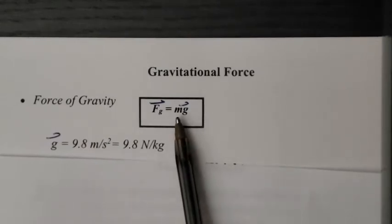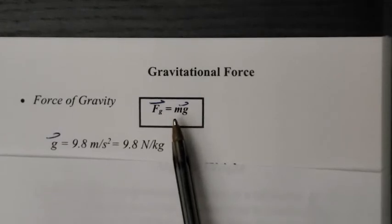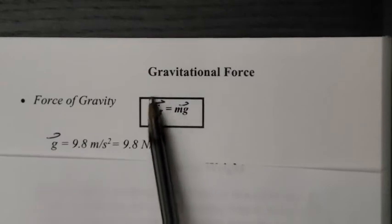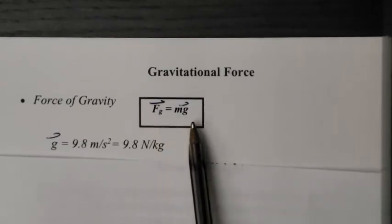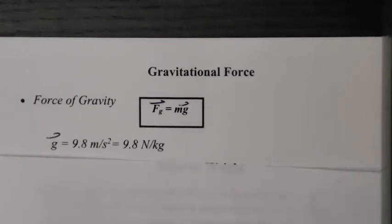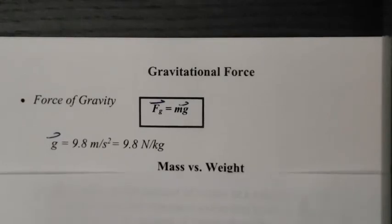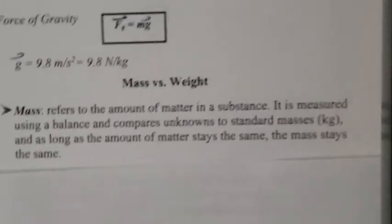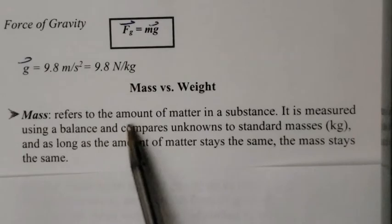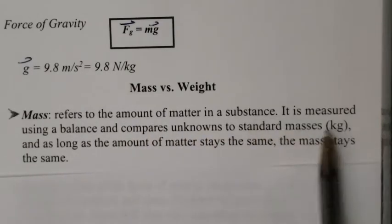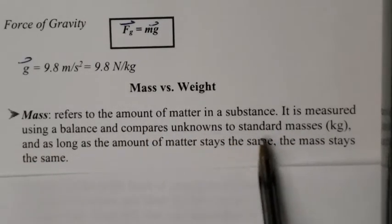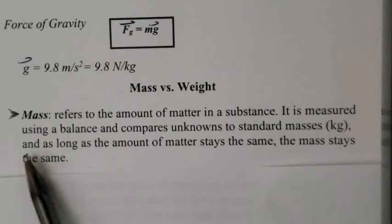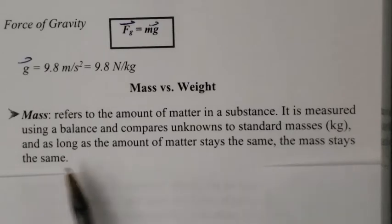We have to be careful with the way we define things. Mass is measured in kilograms. The word weight actually refers to the force of gravity. So weight and force of gravity mean the same thing. And that's actually measured in Newtons. So mass refers to the amount of matter in a substance. It's measured using a balance and compares unknown to a standard mass in kilograms. And as long as the amount of matter stays the same, the mass stays the same.